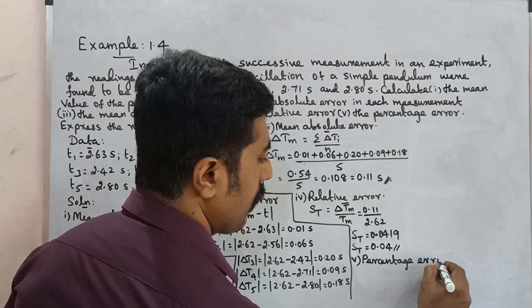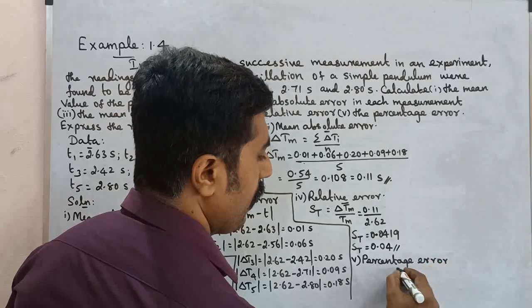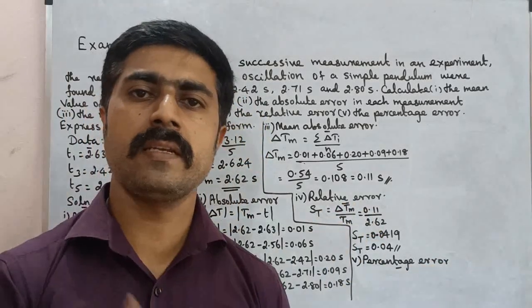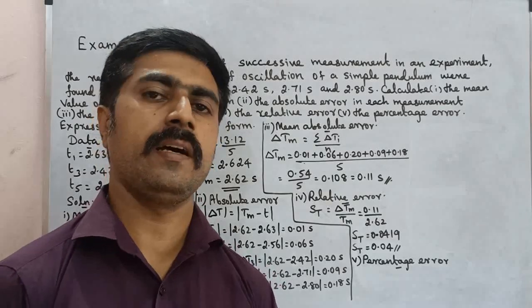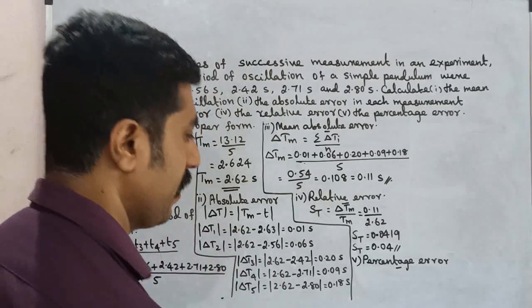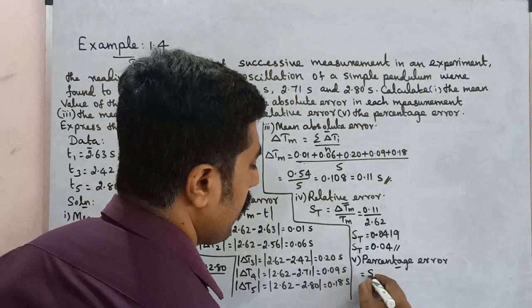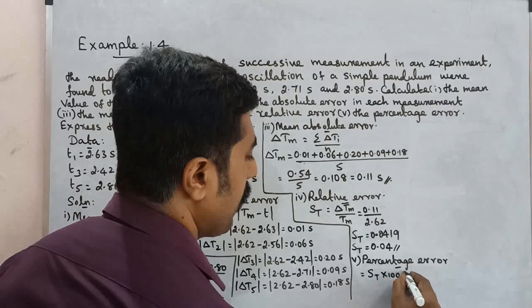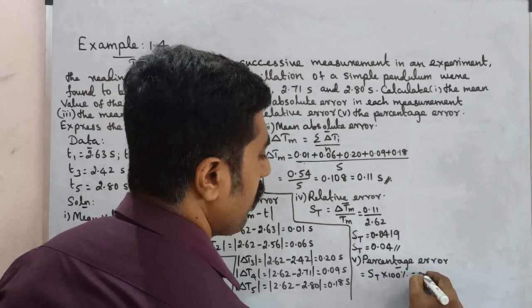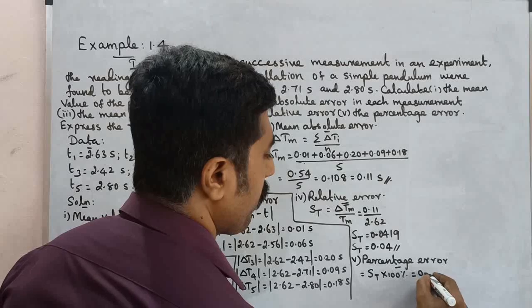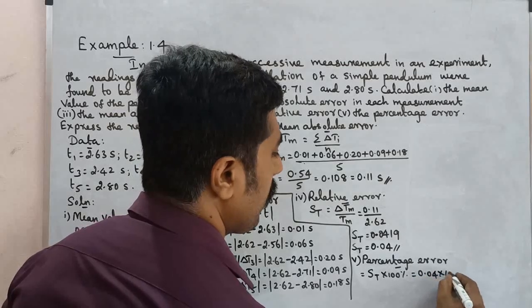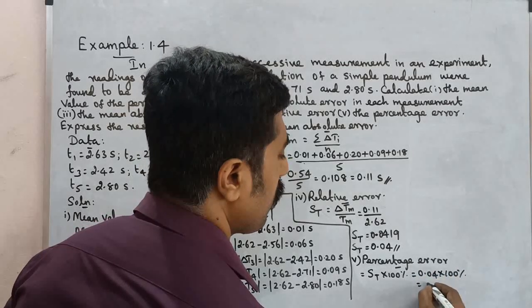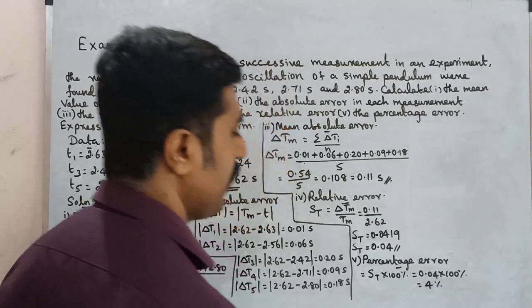Percentage error = relative error St × 100% = 0.04 × 100% = 4%. Percentage error is 4%.